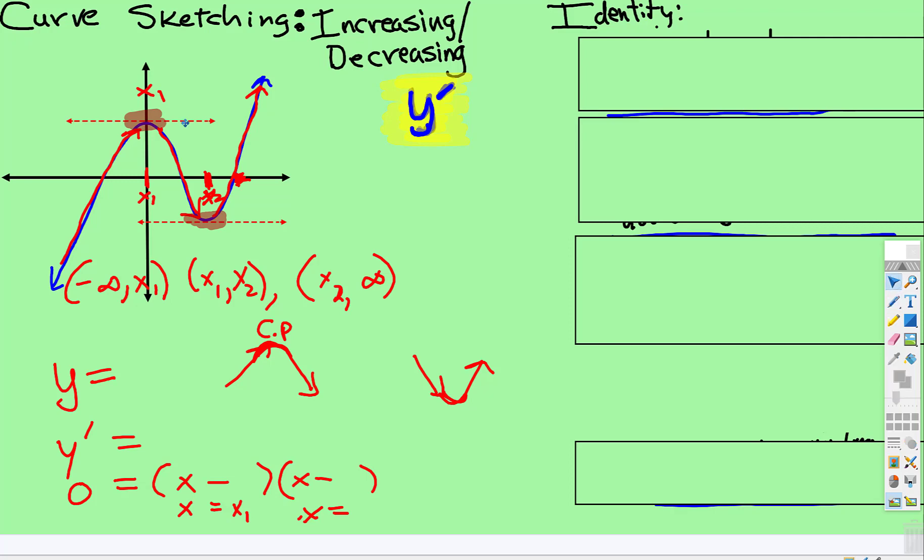and that's where there's a min or max highlighted by the tangent line that's horizontal, which means the tangent line, so m tangent is equal to zero.